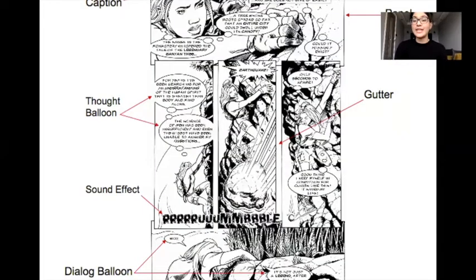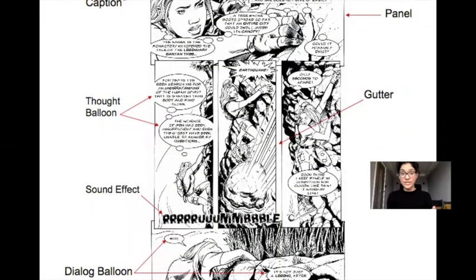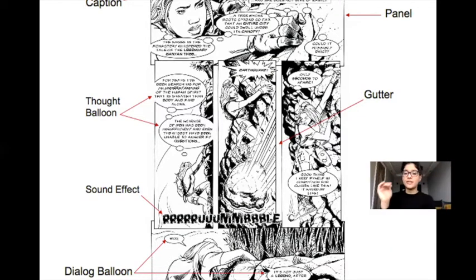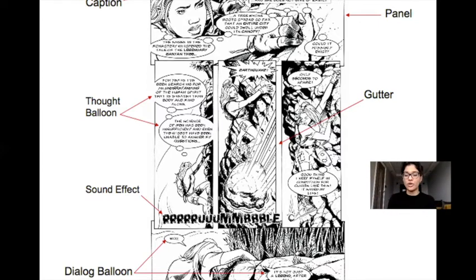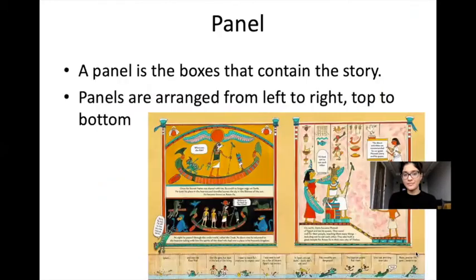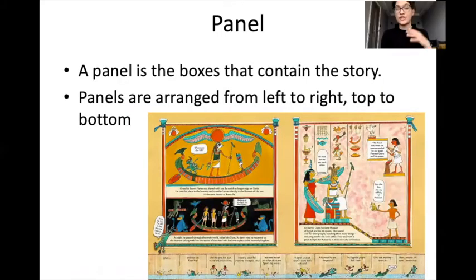Here is a close-up of the features of a graphic novel and where you can find them. You have the caption, panel, gutter, thought balloon, sound effect, and dialogue balloon as well. Now we're going to go through what each of those features mean and why they are featured in a graphic novel to begin with.